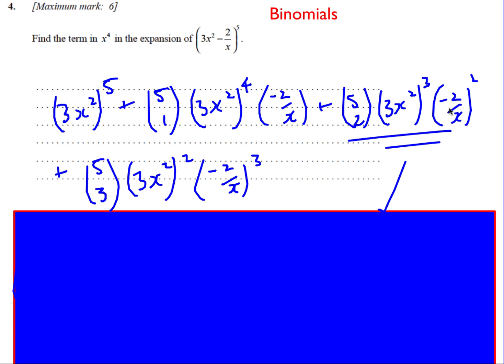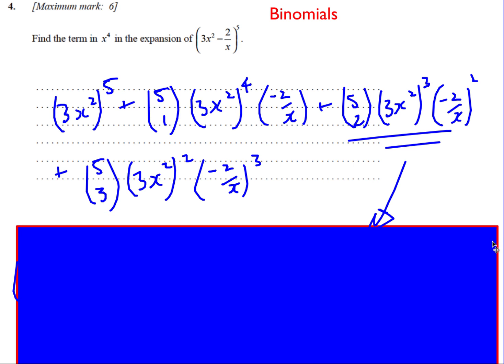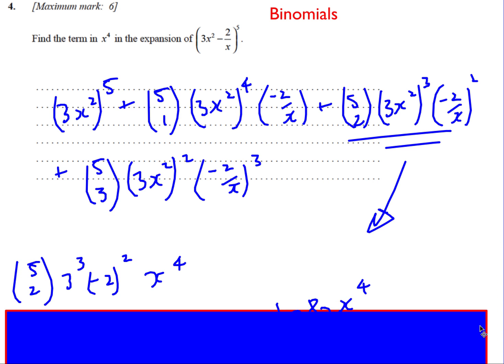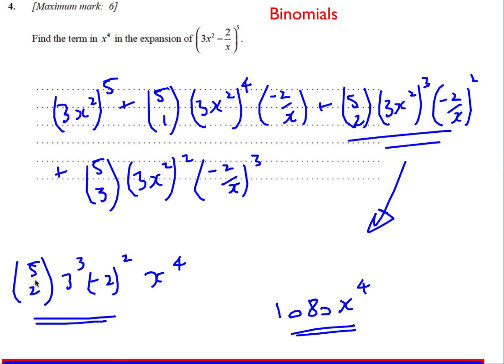It's important I've got my brackets in, because if I'm dealing with negatives, that can cause a problem. So make sure you put your brackets in. And it's just a case of now, stick it on your calculator. 5 choose 2. I've got a 3 cubed. Don't forget to do that bit. I've got a minus 2 squared. Again, make sure you put your brackets around it. I've got my x^4. Therefore, the 1080 is the coefficient of x to the power 4.